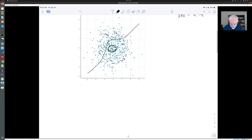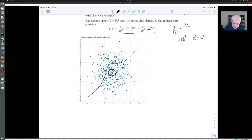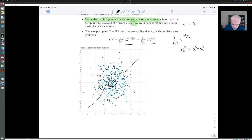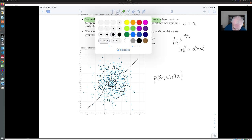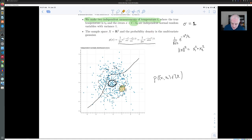And by definition, the probability that you lie in a particular region is the integral of this density function over that region. So the probability that x one x two lies in a particular set u, that probability is the integral over u of this density function.